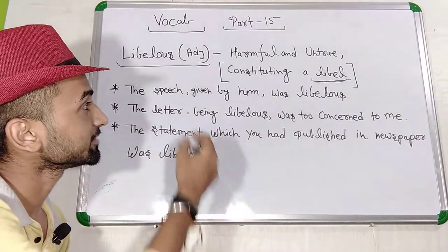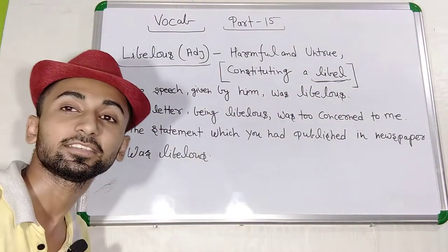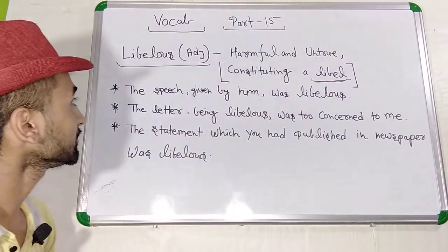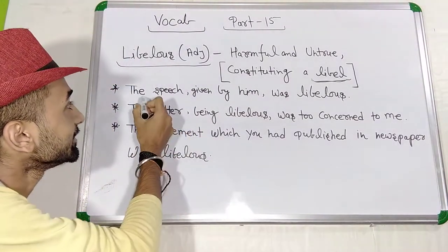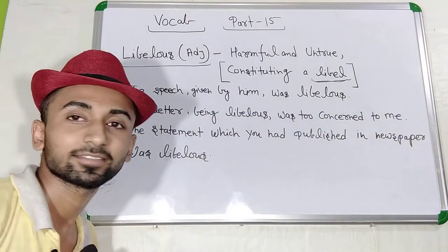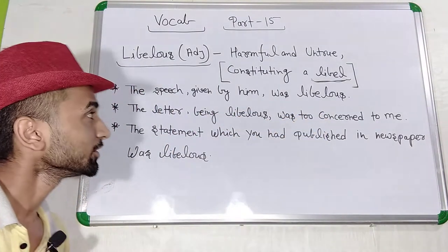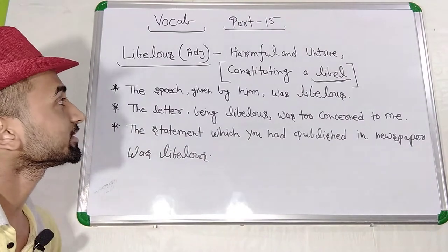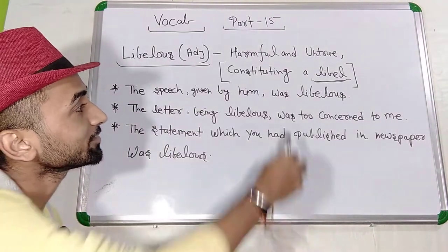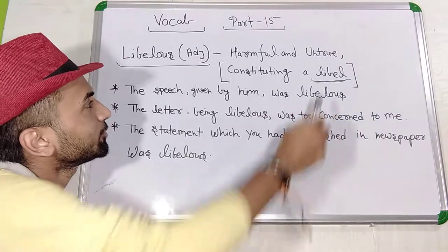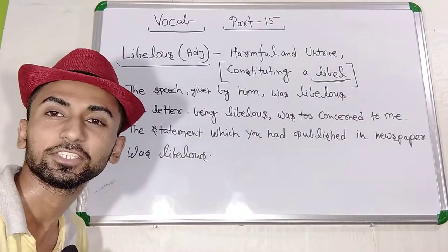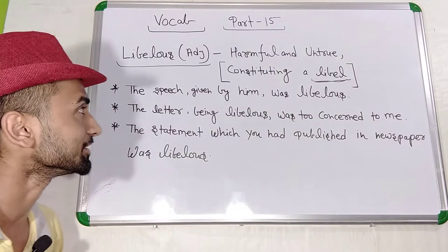I have written some examples here, and I am going to read them one by one. The first one is: the speech given by him was libelous. So the speech which was spoken by him was libelous, meaning it was untrue. It was a defamatory speech. It was an insulting speech.